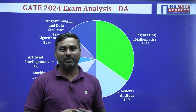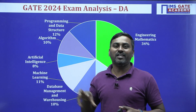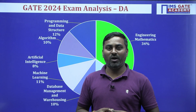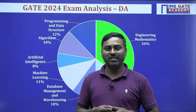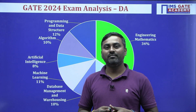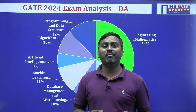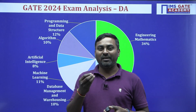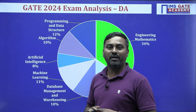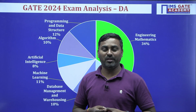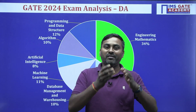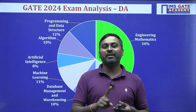Looking at the various questions which we solved, the level of difficulty was very easy — I can say this comparing to past many years of GATE papers. This is the first time we saw that some questions were too easy, especially from Programming and Data Structures and even from Algorithms. Computer science students who appeared for the DA paper might have scored well.